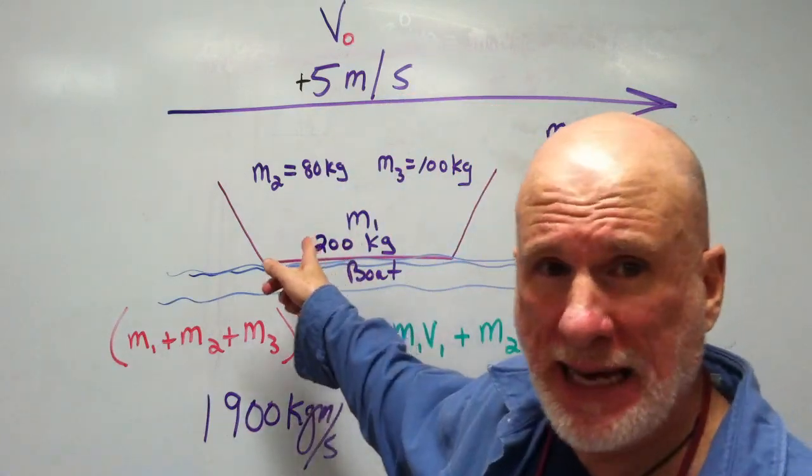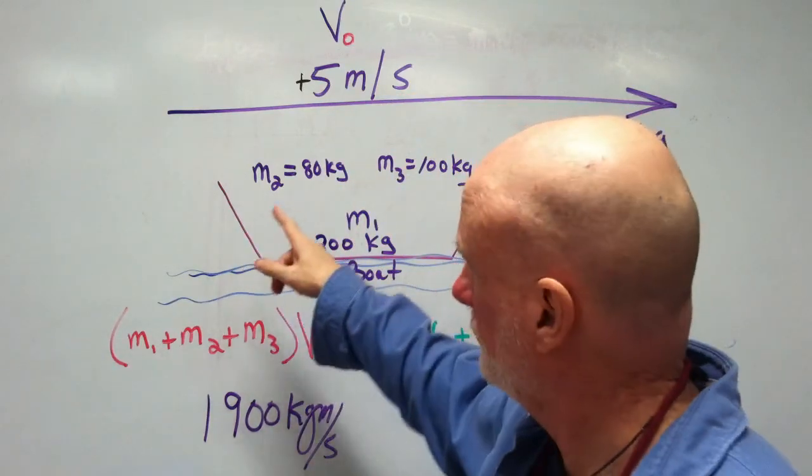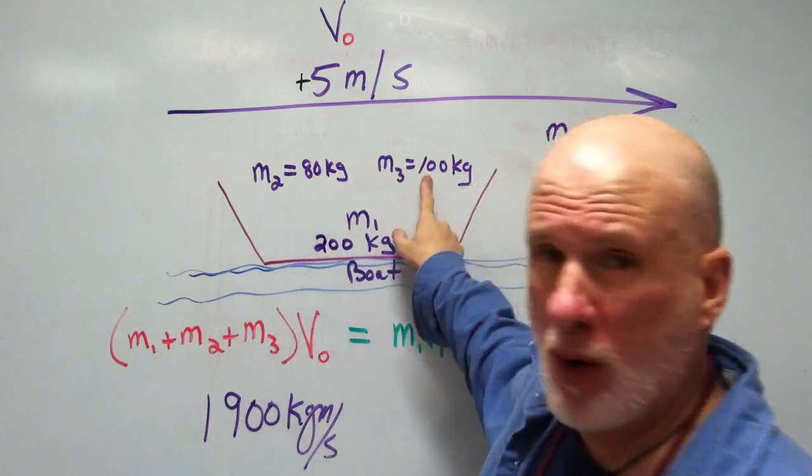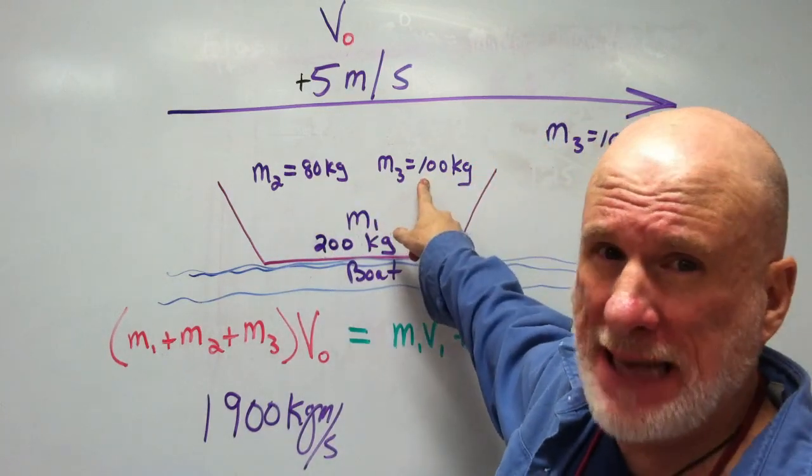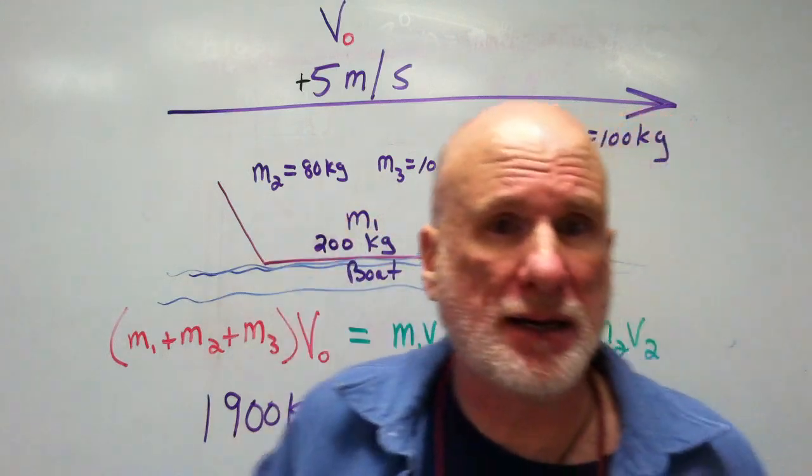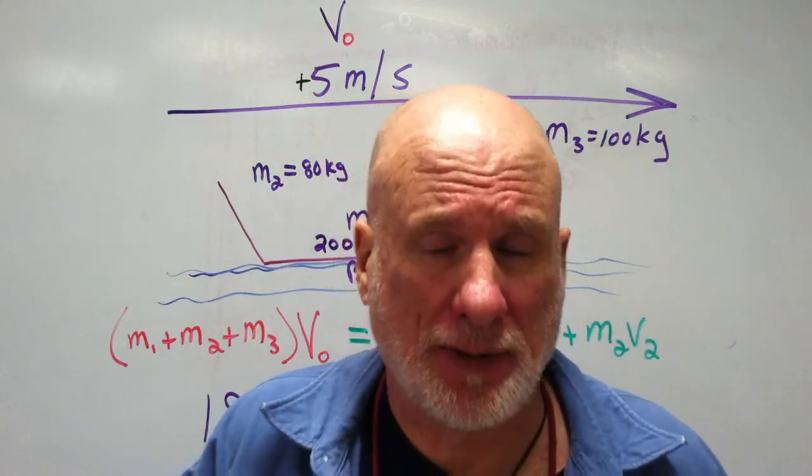The boat has a mass of 200 kilograms. I am 100 kilograms, that's M3, and M2 is my friend, they're 80 kilograms.